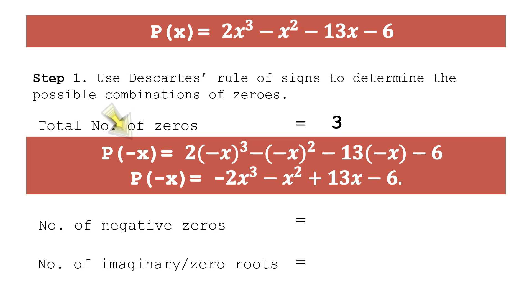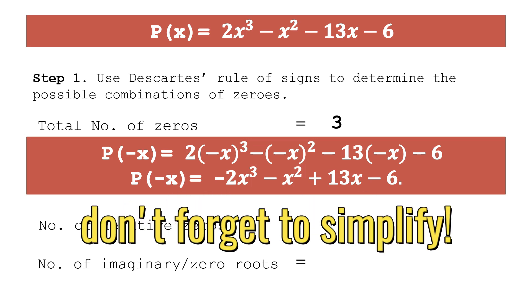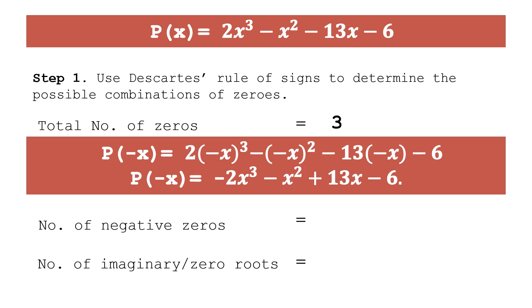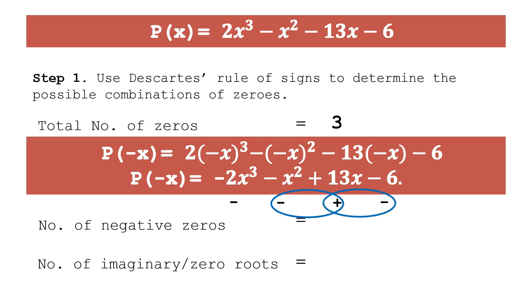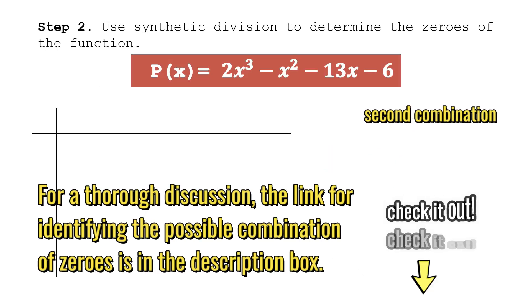To find the number of negative zeros, substitute −x into the polynomial and count sign variations in p(−x). After simplifying, the signs are: −2x³ (negative), −x² (negative), +13x (positive), −6 (negative). Counting variations: negative to negative — none; negative to positive — one variation; positive to negative — another variation. That gives two negative zeros. Since positive plus negative zeros already totals three, there are no imaginary or zero roots.